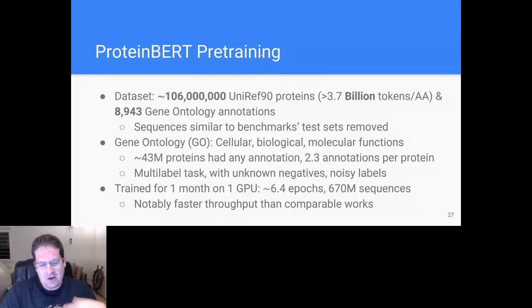And by the way, out of this 100 million, only 43 million had any GO annotation. And out of those on average, they had about two out of 9,000. So multi-label task, very noisy, very sparse. It was a big question as to whether this would actually improve things.